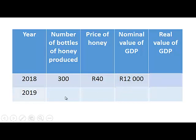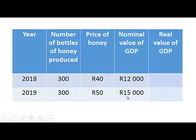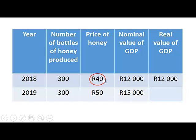In 2019, 300 bottles of honey were again produced but now sold at a price of 50 Rand. If we calculate the nominal value of GDP for 2019, we can see it is 15,000 Rand, so it looks as though GDP has increased. But if we look at the real value of GDP, we are going to use the 2018 price of 40 Rand to calculate the real value of GDP for both years. For 2018, calculating 300 times 40, we can see that the nominal and real value of GDP are exactly the same, because it is the same quantity and the same price.